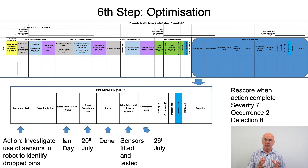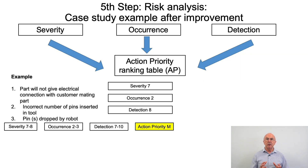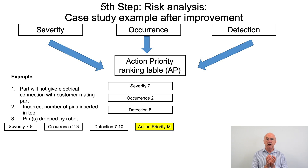The action was completed: sensors were fitted to the robot and comprehensively tested to make sure they worked, with testing completed on the 26th of July. After this action was implemented the team went back and re-scored. We haven't made any product design change, so severity remains at seven. We improved the prevention control so occurrence reduces to two. Detection remains at eight. Going back to action priority after the improvement, with severity between seven and eight, occurrence between two and three, and detection between seven and ten, we've reduced the action priority risk to medium.